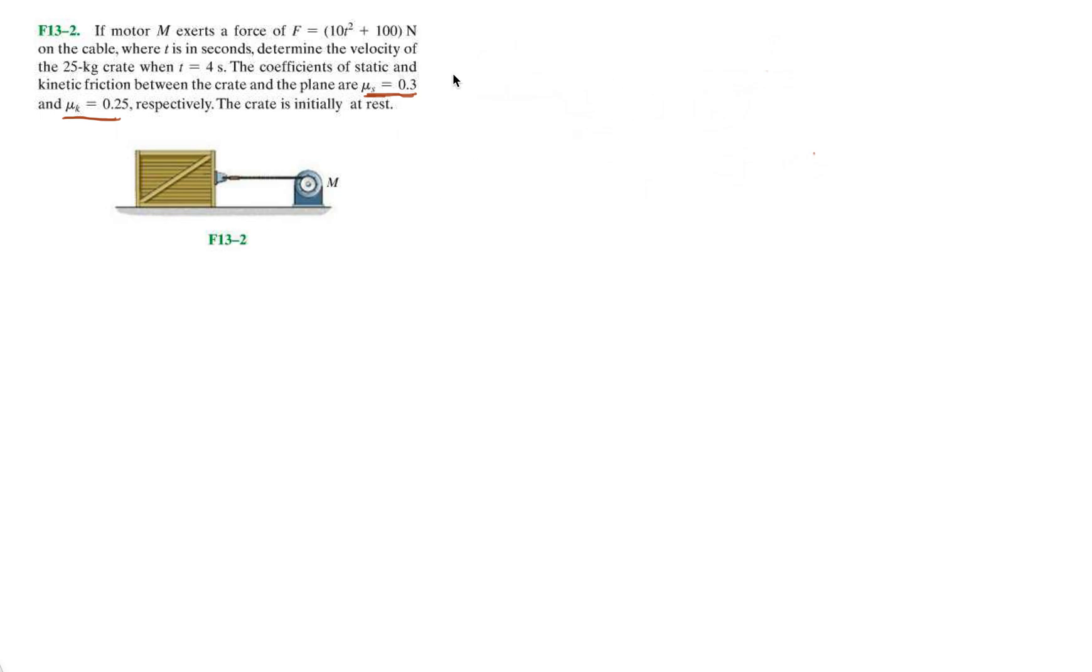So what we're going to do here, and what you should do, is whenever they give you the static coefficient friction and the kinetic one, you want to try both. So the first thing I'm going to do is just say Fs is μs, so that's the friction, static friction, and then Fk is μk times the normal.